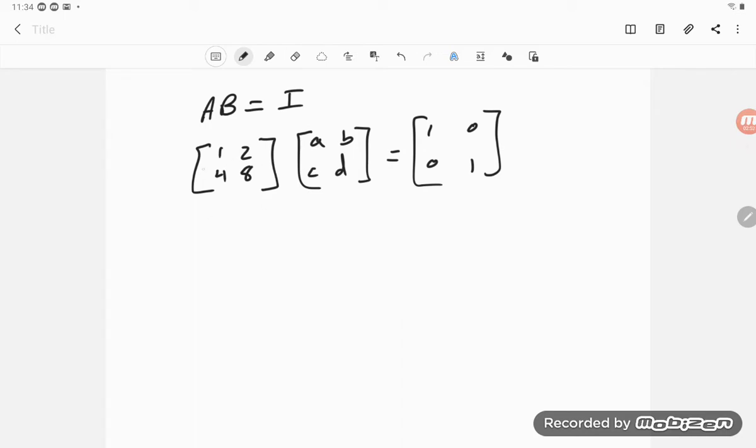Let's go ahead and do the matrix multiplication on the left hand side. We get 1 times a plus 2 times c, we get 1 times b plus 2 times d, and 4 times a plus 8 times c, and then 4 times b plus 8 times d.